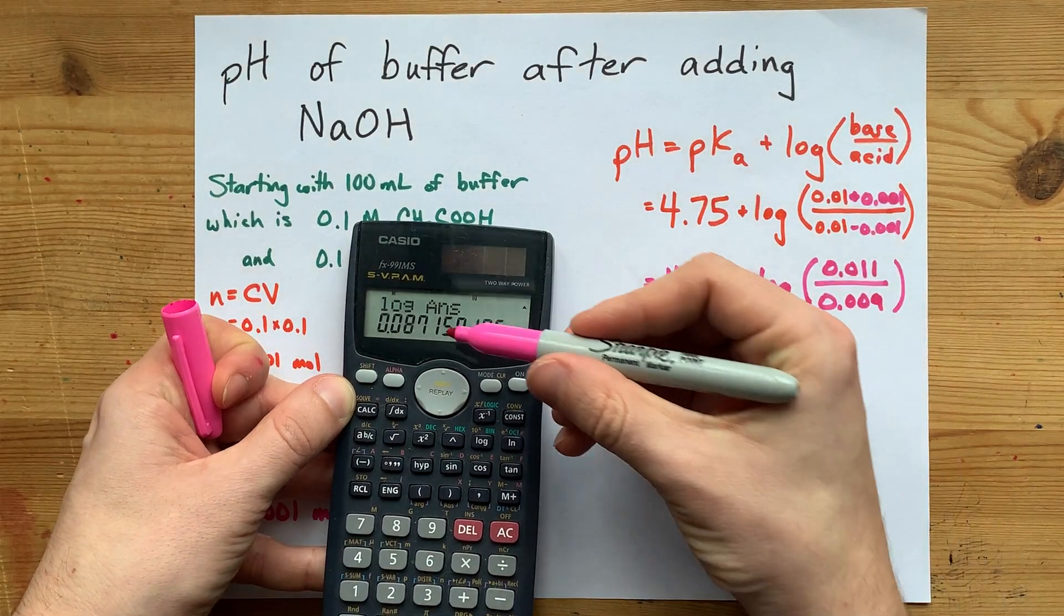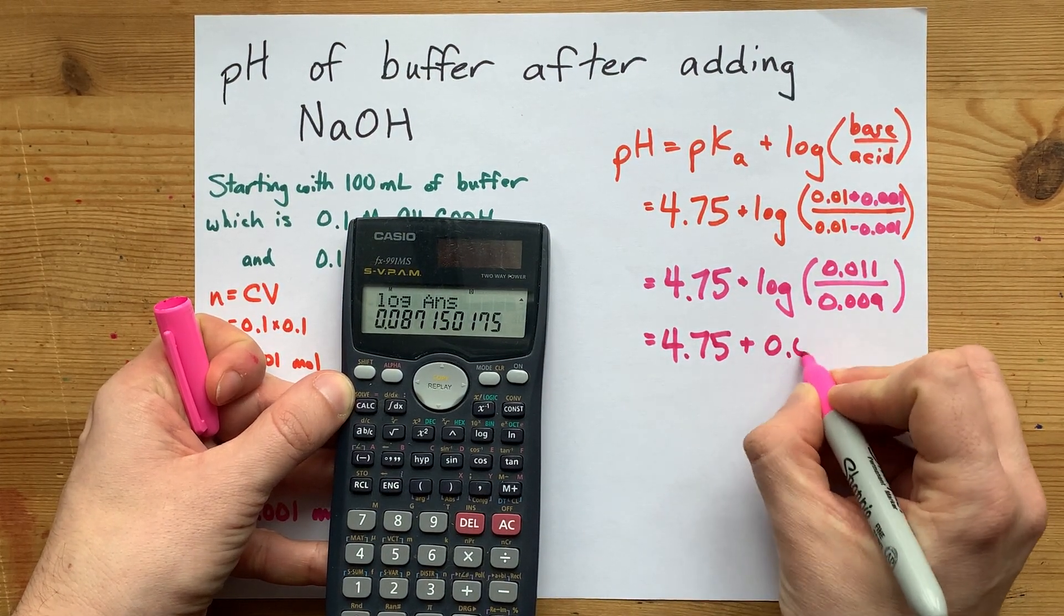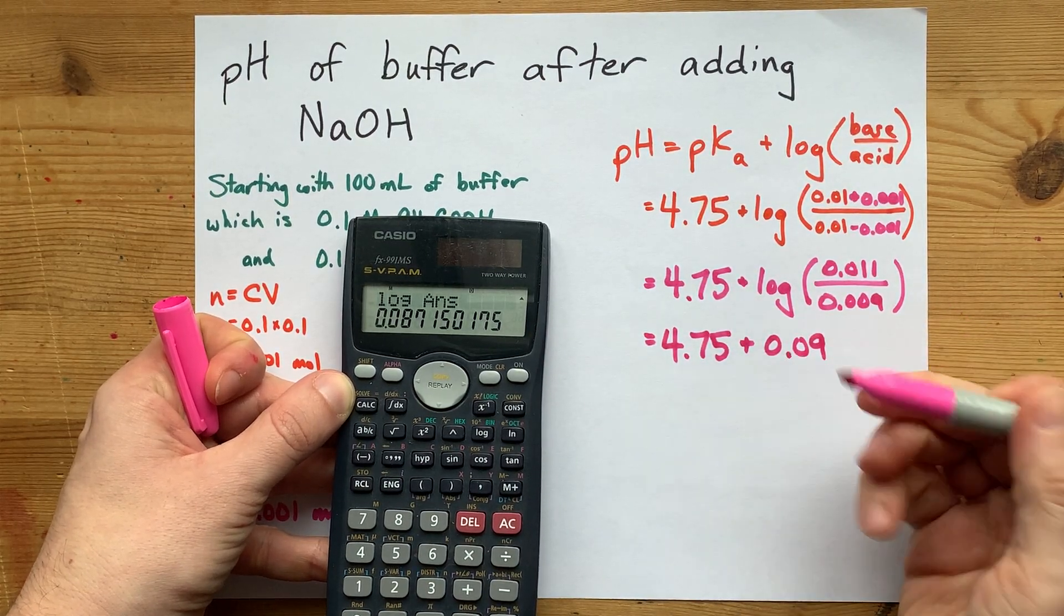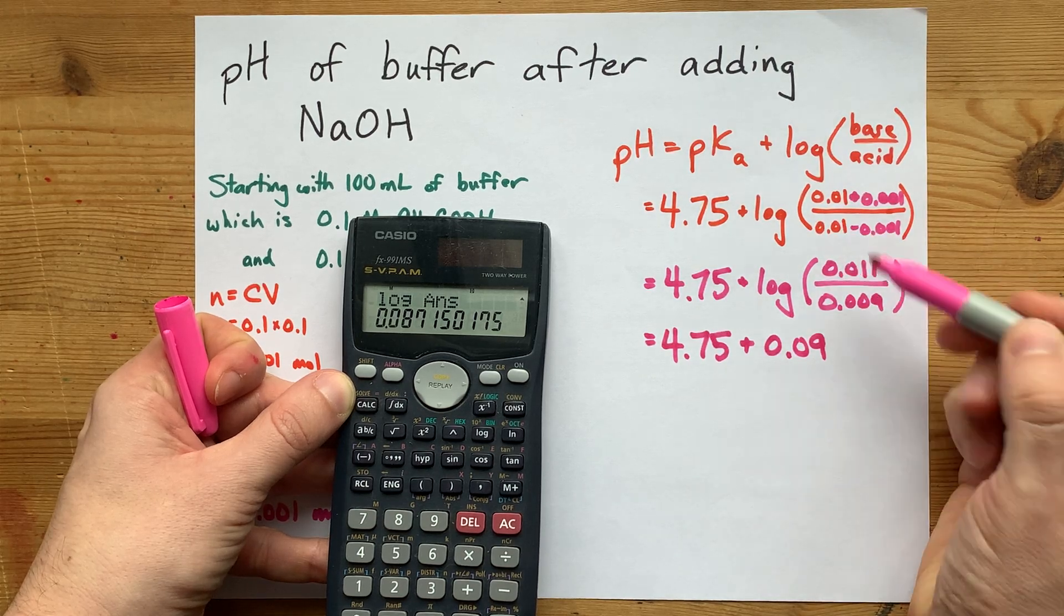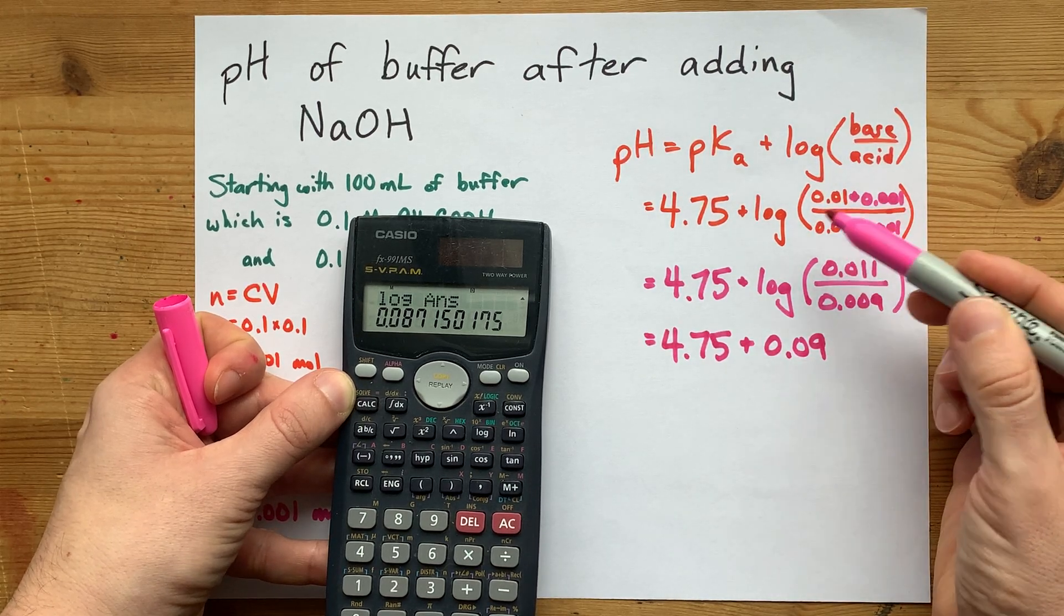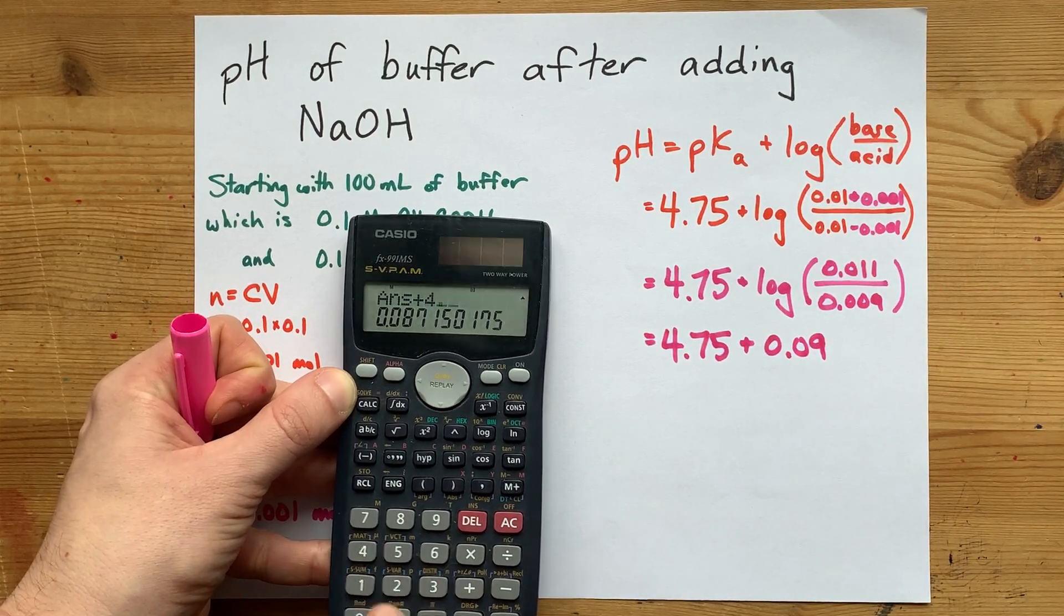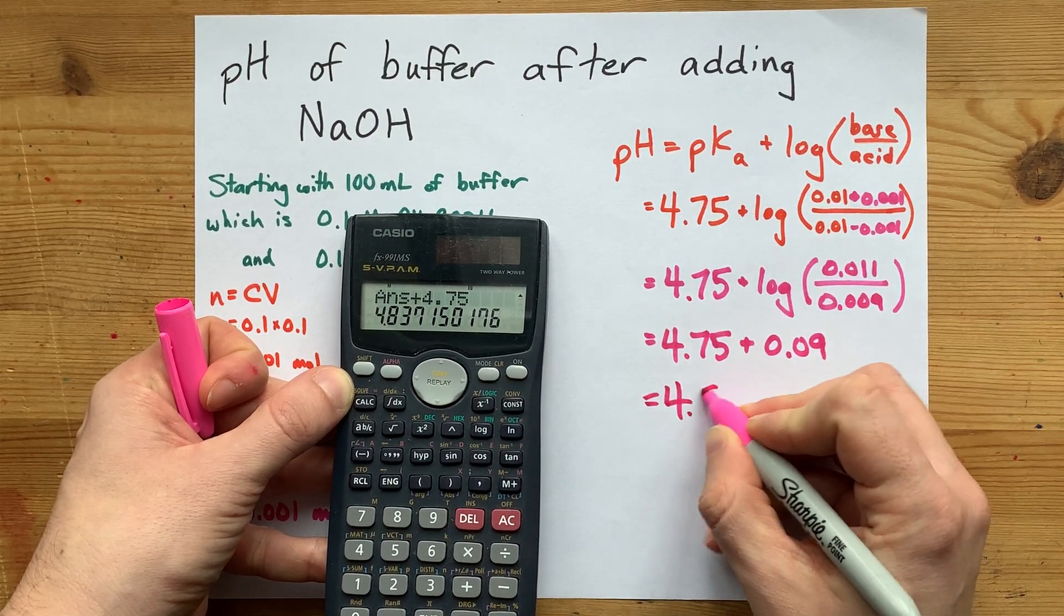Now that gives me a positive number. So I'm going to be adding 0.09 approximately onto this. And that makes sense, because the pH is supposed to go up, especially when I decrease the denominator and increase the numerator of the thing I'm logging. When I add 4.75 to that, I end up with about 4.84.